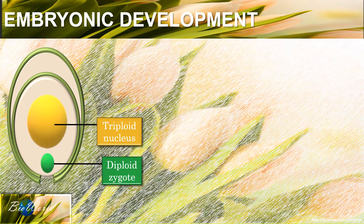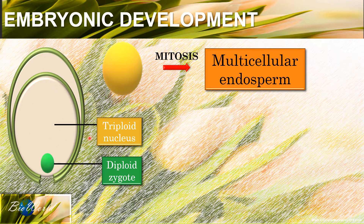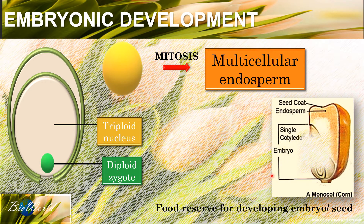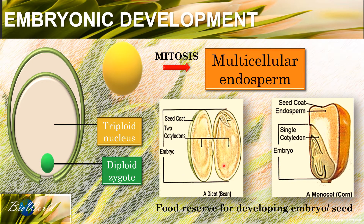Cotyledon stores nutrients for use during seed germination. The triploid nucleus will also carry out mitosis and produce a multicellular endosperm. The function of the endosperm is to store nutrients for the developing embryo as well as for use during seed germination. The endosperm is visible in monocotyledon seeds like corn, where you can see the embryo with the plumule, the radicle and the cotyledon, and above it a layer of endosperm. However, in a dicotyledon seed the endosperm is not visible because the nutrients have been transferred to the cotyledon.